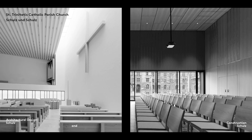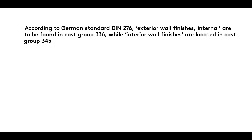In design terms, deciding whether a wall surface is to have visible or invisible joints is an important choice. The differences between the wall surfaces used in the interior of our Provost Church in Leipzig and in the community hall are clear to see. Perfectly smooth, joint-free walls can only be achieved using a wet finishing technique such as plastering or priming and painting.